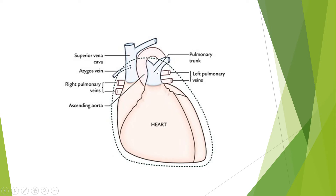The right pulmonary artery takes deoxygenated blood to the right lung, and the left pulmonary artery drains deoxygenated blood into the left lung. In the lung, oxygenation of the deoxygenated blood occurs and it converts into oxygenated blood. There are four pulmonary veins at the hilum or root of the lung — two on the left side and two on the right side.